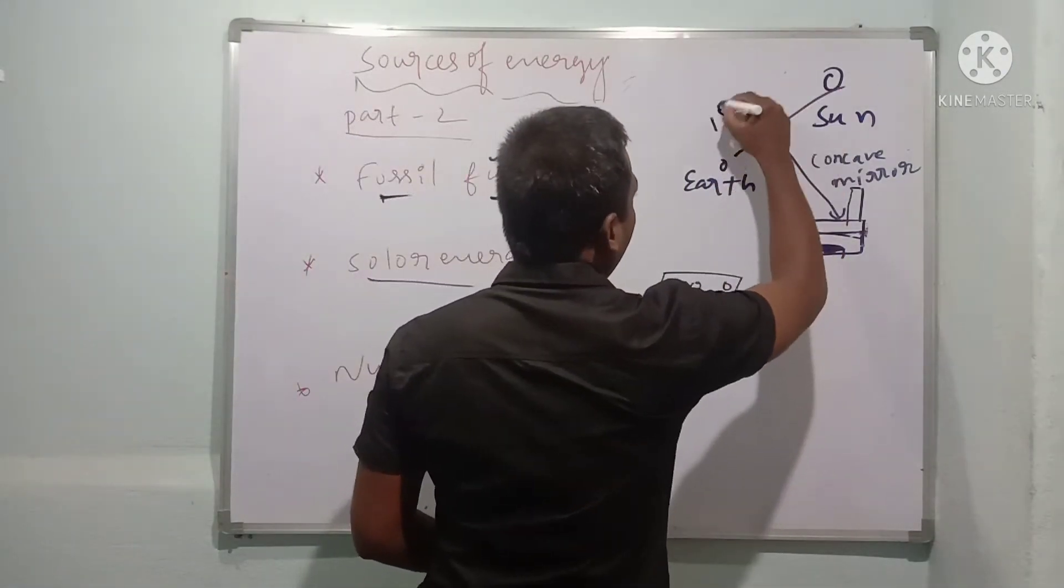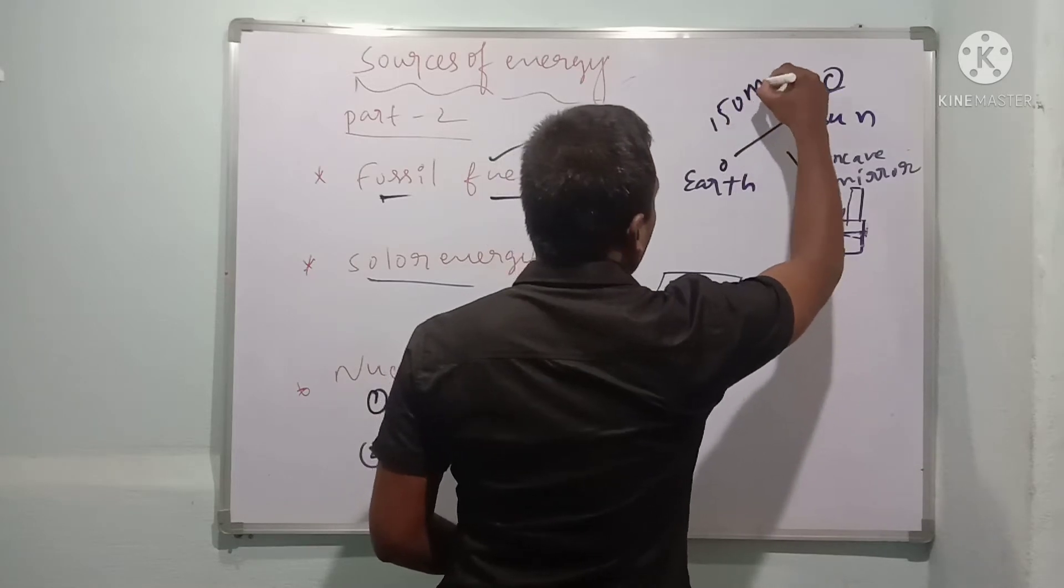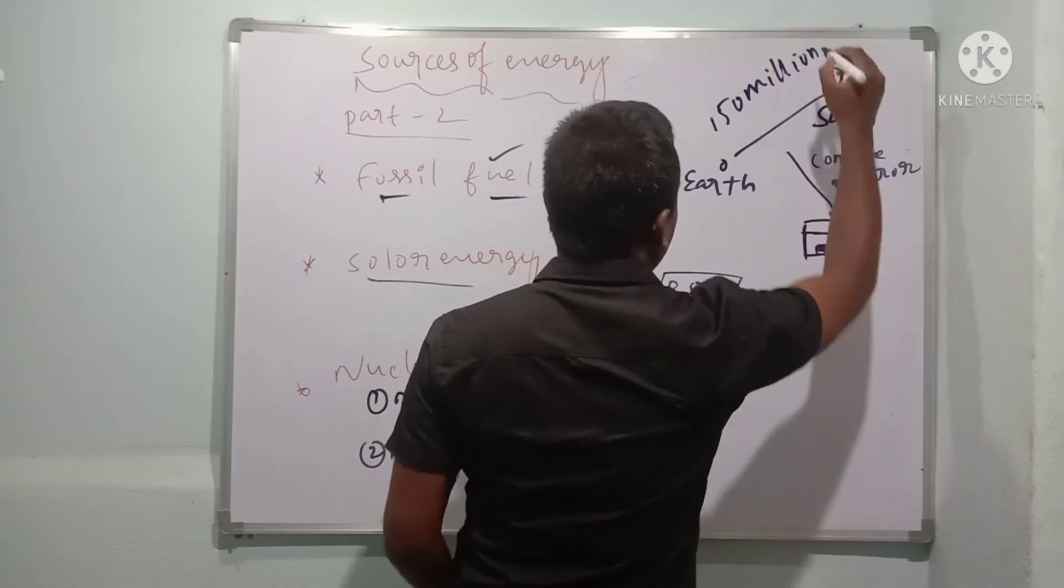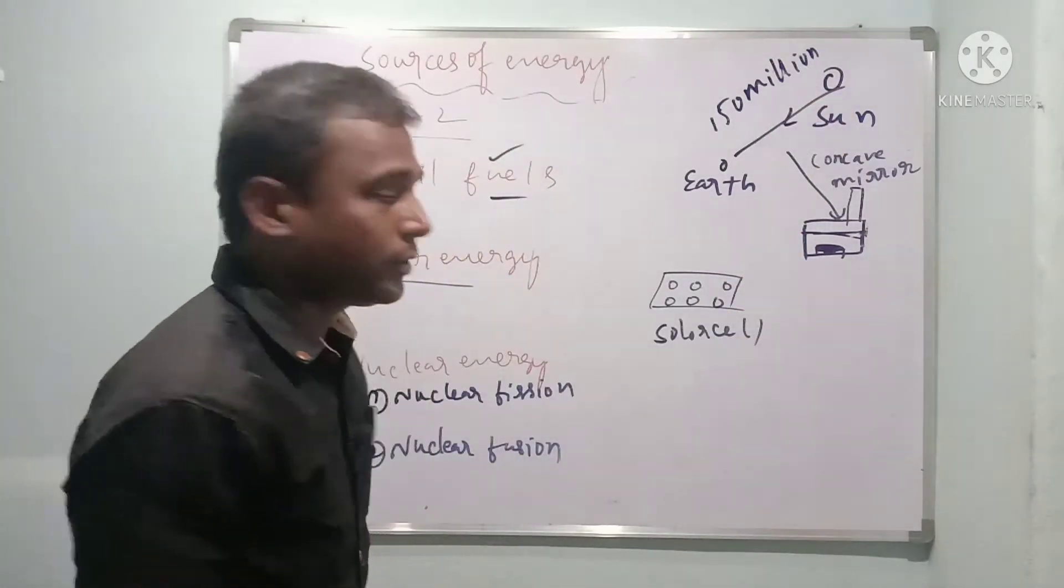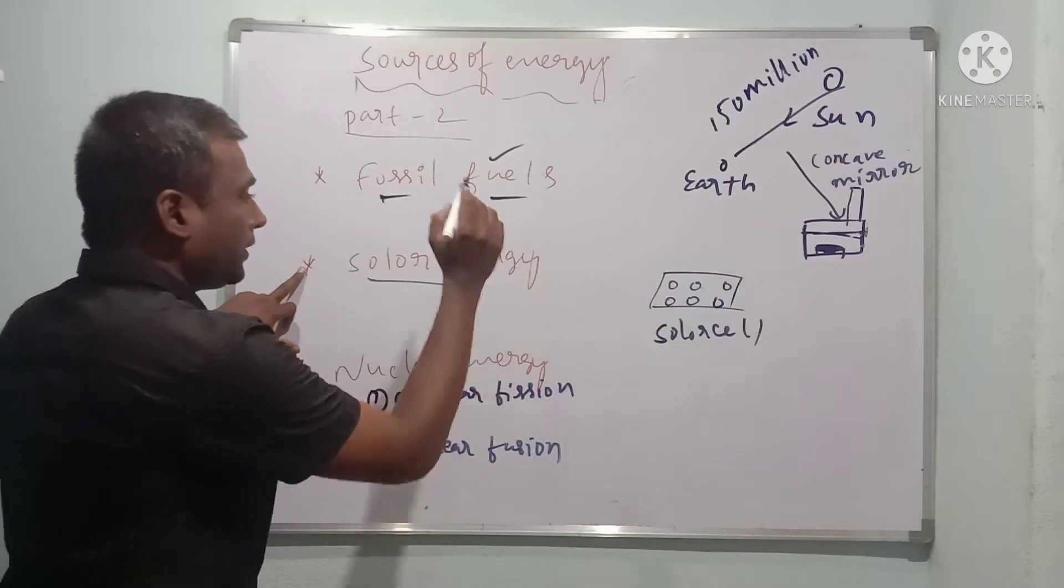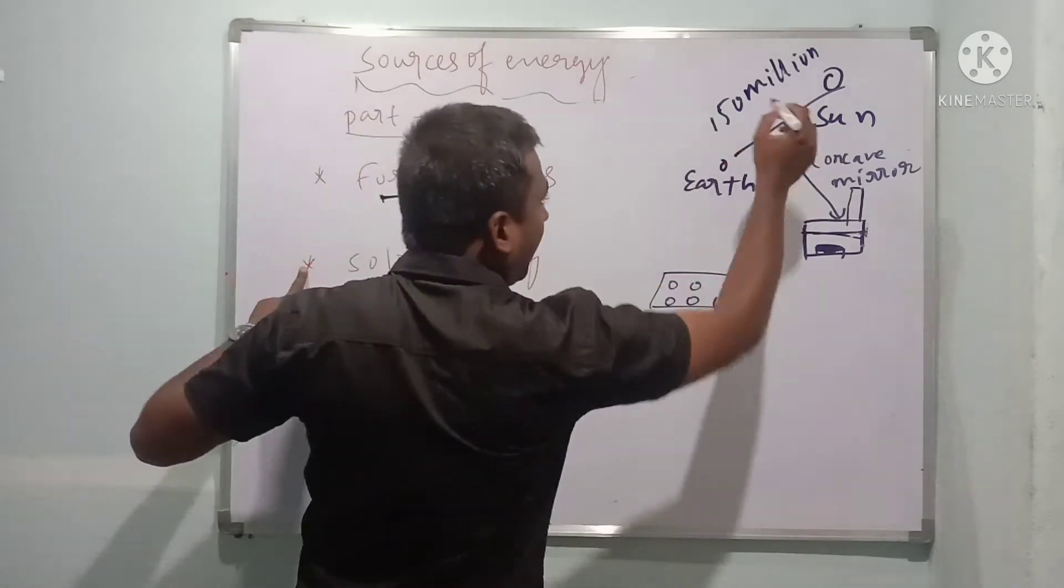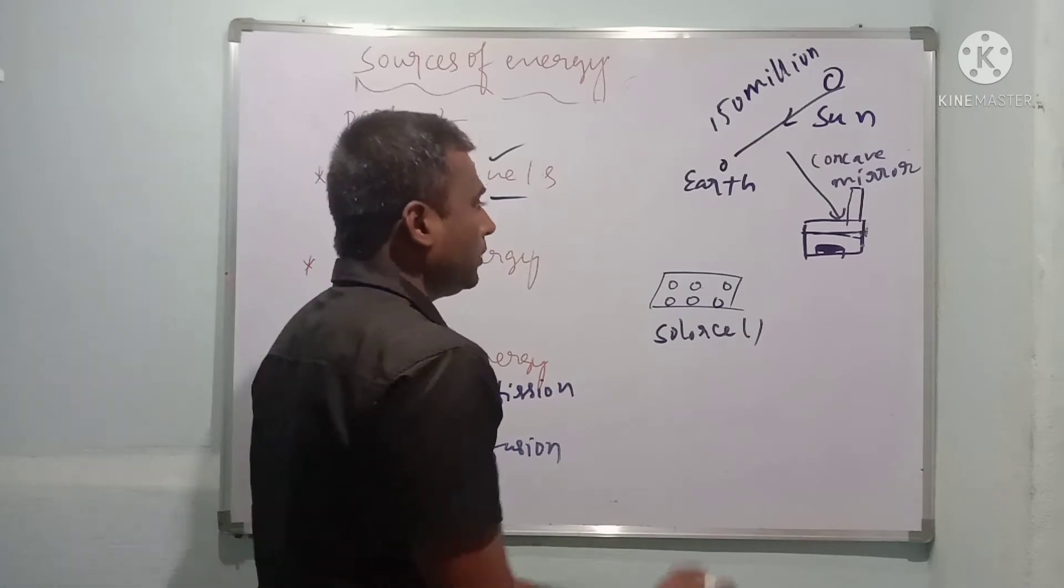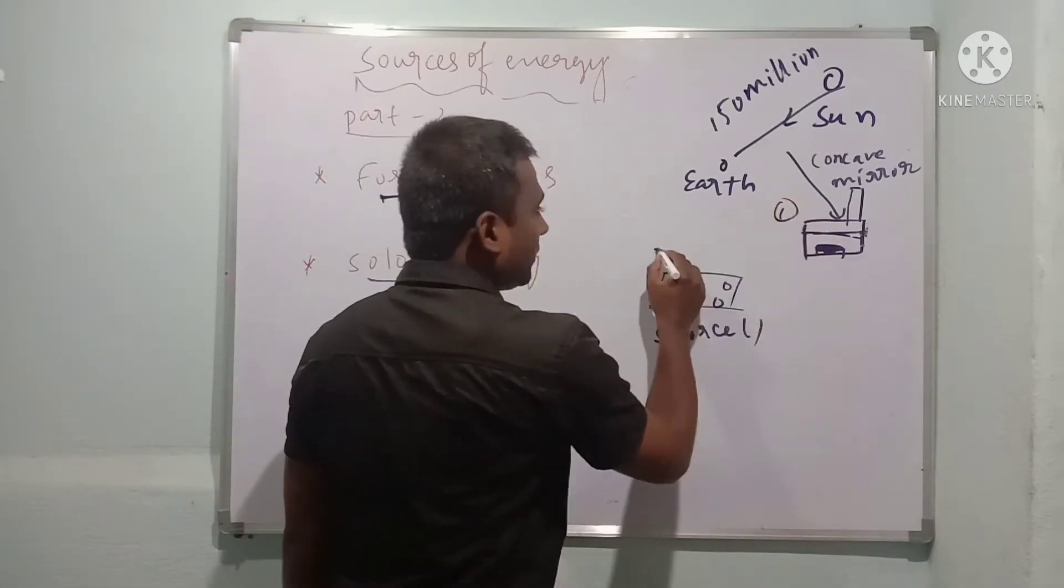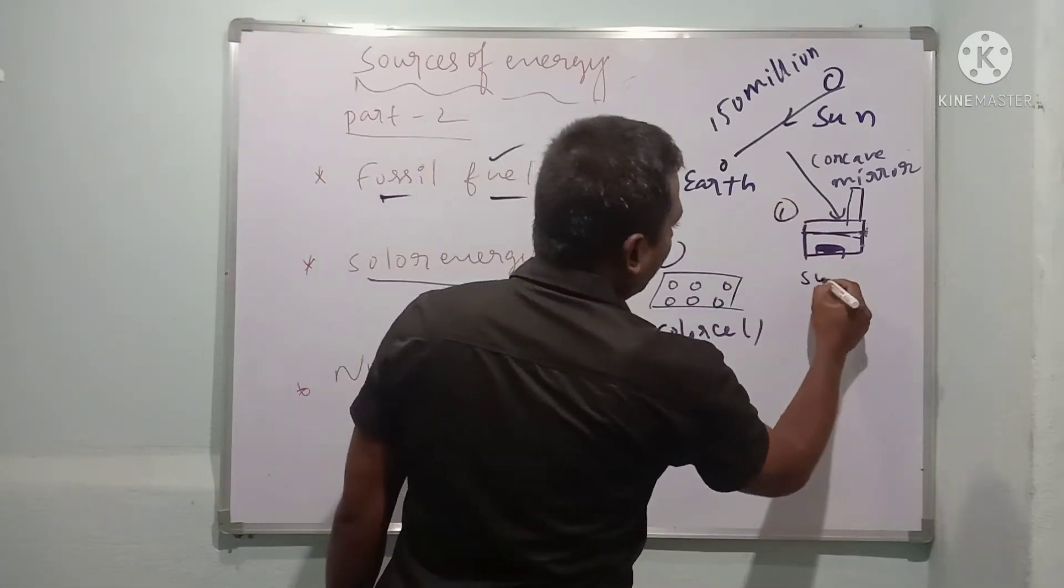After this, solar energy. The distance between the Earth and Sun is about 150 million kilometers. Sun emits light in the form of heat and light. The process of obtaining energy in the form of light and heat is called solar energy, and it is used in two ways.